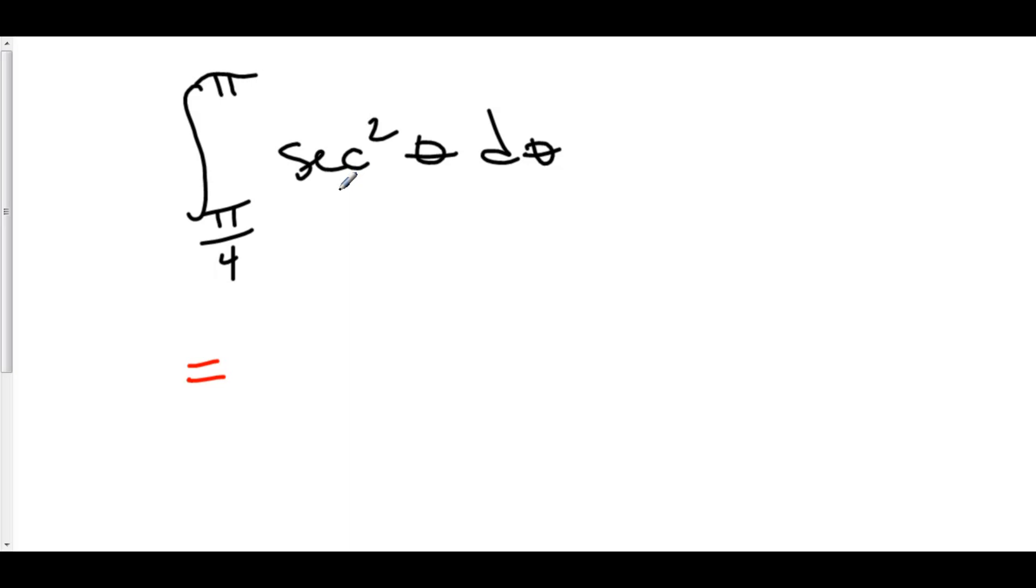Now, I gotta find a function that when you take the derivative of it, you get secant squared θ, or in other words, the anti-derivative of secant squared θ. Turns out, it's tan θ, because the derivative of tan θ is secant squared θ. Pure memorization.